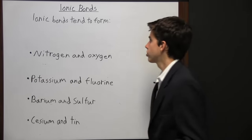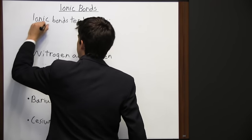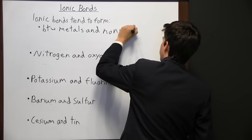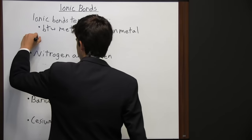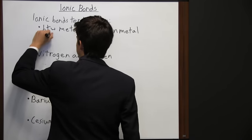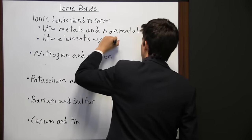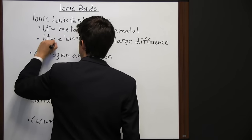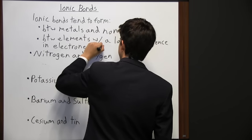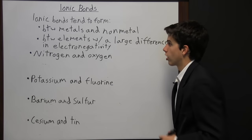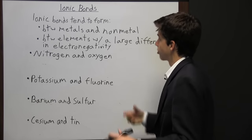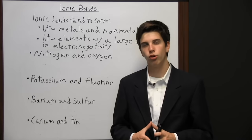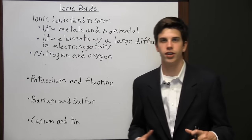Ionic bonds tend to form under two certain criteria. First, ionic bonds tend to form between metals and non-metals — if you have two elements and one's a metal and one's a non-metal, an ionic bond is likely to form. Second, ionic bonds tend to form between elements with a large difference in electronegativity. The larger the difference in electronegativity, the better the chance ionic bonds will form.